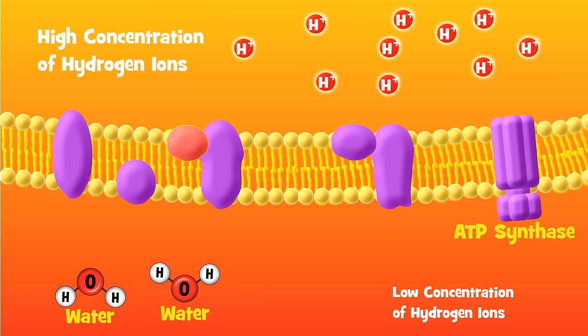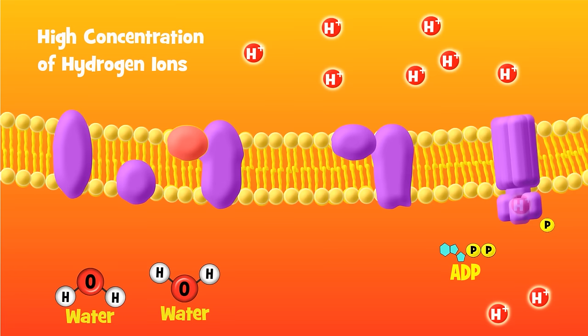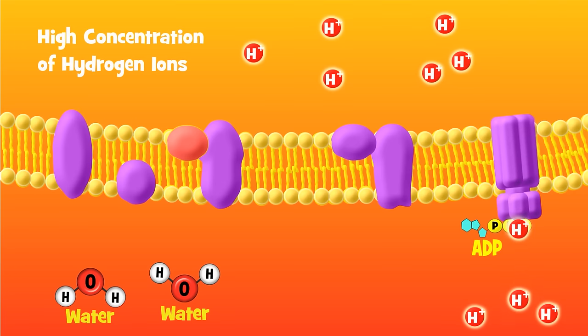A protein called ATP synthase makes a channel that allows hydrogen ions to flow through from high concentration to low concentration. You may remember that molecules tend to move from high concentration to low concentration naturally, a process known as diffusion.